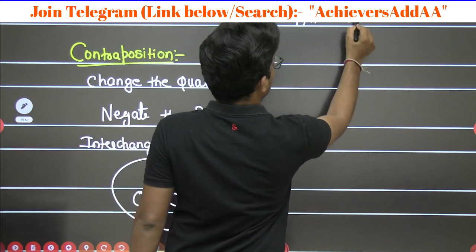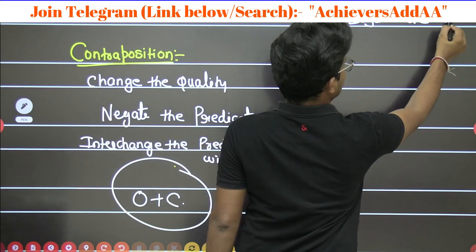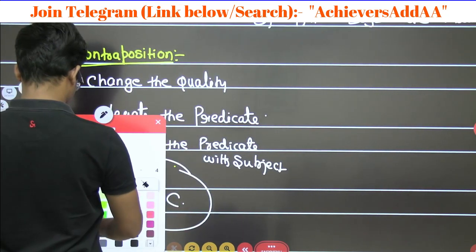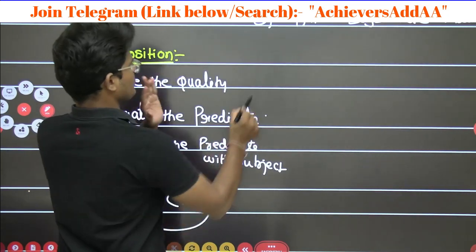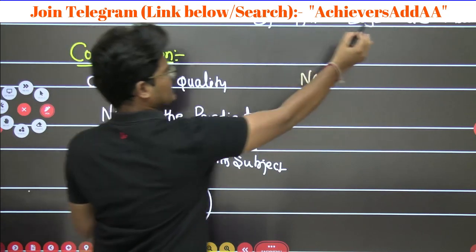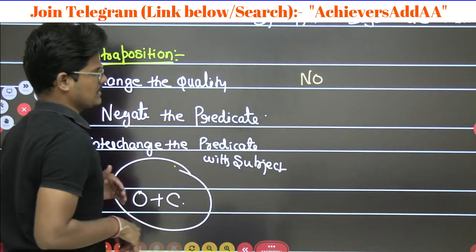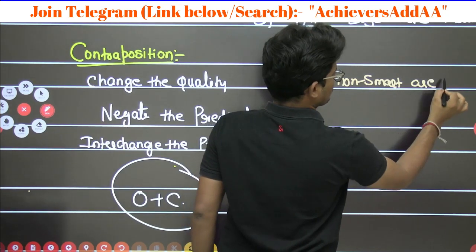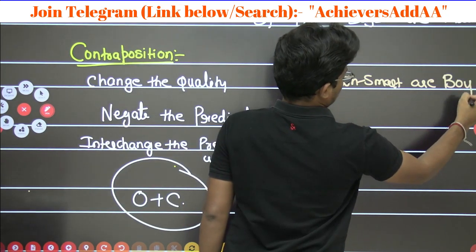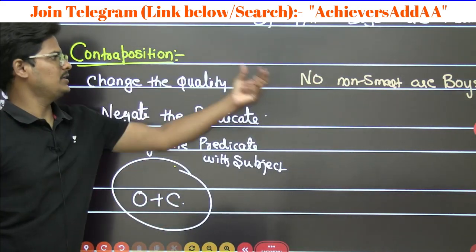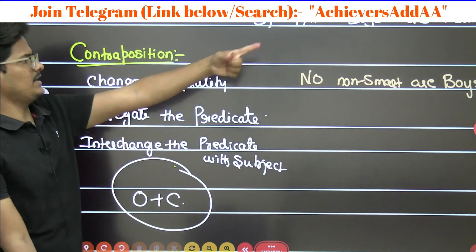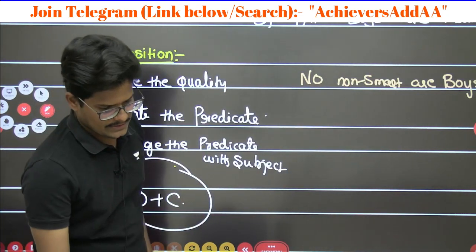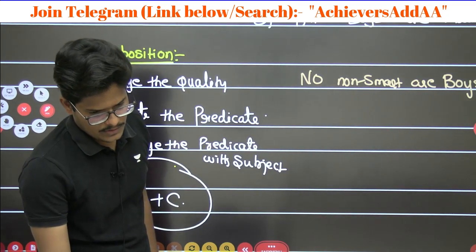Our standard example is: All boys are smart. What will be the conclusion? First, change the quality: 'all' will become 'no'. Then negate the predicate: 'smart' becomes 'non-smart'. Then the predicate should become the subject. So the result is: No non-smart are boys. I changed the quality, negated the predicate, and interchanged the predicate with the subject. That is contraposition.